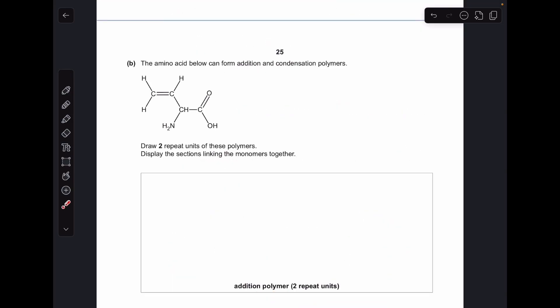Moving on to part B, so we've got this amino acid told it can form addition and condensation polymers. So it can form an addition polymer because of the carbon-carbon double bond. So I'm just going to use the trick my teacher gave us when I did my A-level. Make your monomer look like an ethene molecule. Well it kind of does already. I'm just going to reconfigure this part.